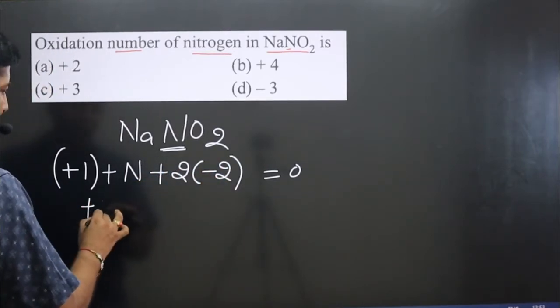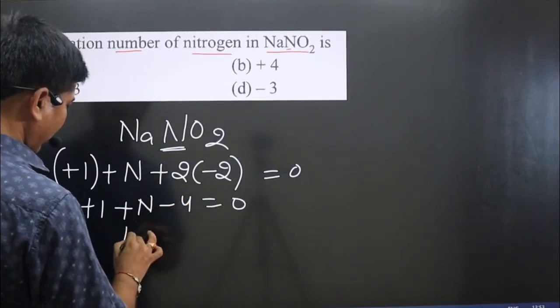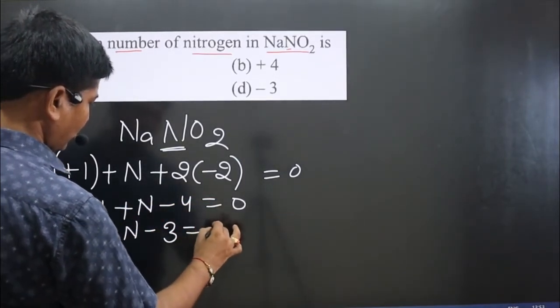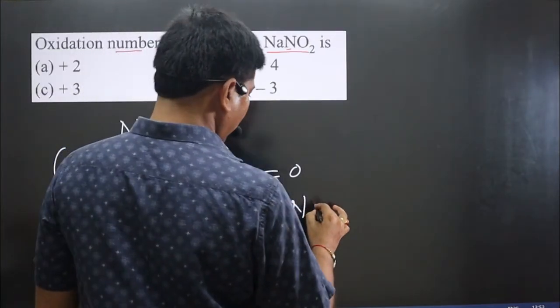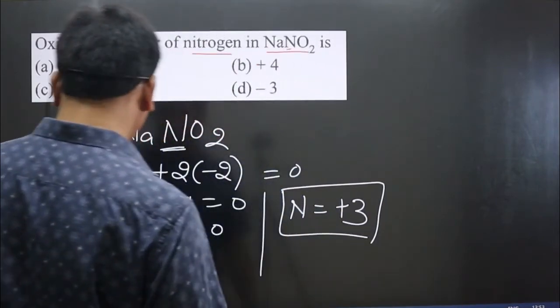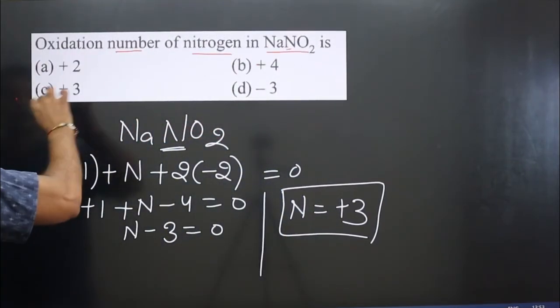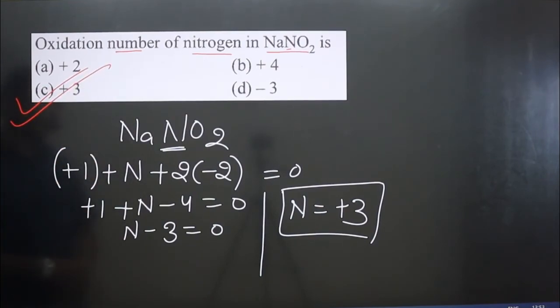Simplify: plus 1 plus nitrogen minus 4 is equal to 0. Then we get nitrogen minus 3 is equal to 0. And then we have nitrogen is equal to plus 3. Nitrogen is present in plus 3 oxidation number in NaNO2. Option C is correct.